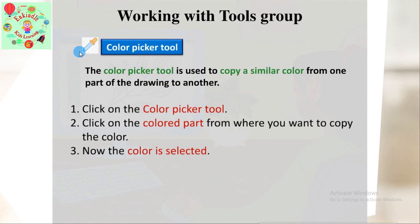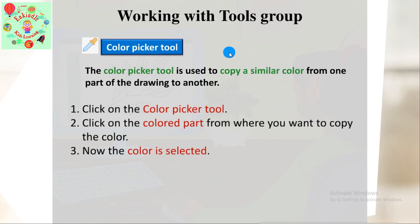Our next tool is the color picker tool, denoted by a picker symbol. The color picker tool is used to copy a similar color from one part of the drawing to another. Suppose I want to use a color already in my drawing — I select the color picker tool and click on that color, and the picker is filled with that color for use. Steps: click on the color picker tool, then click on the colored part from where you want to copy the color.